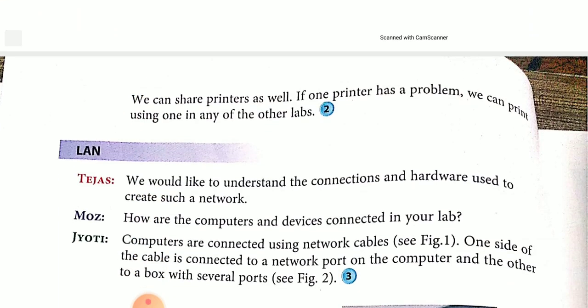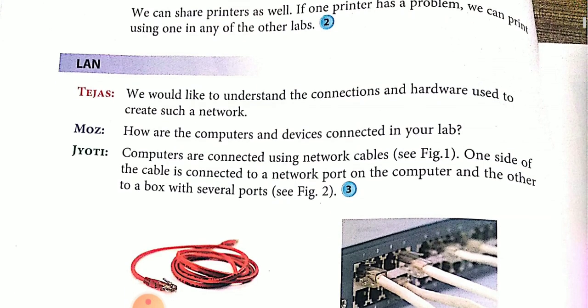We can say it's a group of computers and other devices. We can also include a printer — if one printer has a problem, we can print using one in any of the other labs. For example, if four or five printers are available in the lab and one printer has a problem, we can print using any of the others.